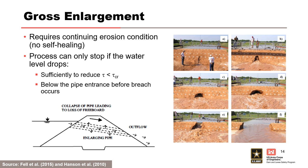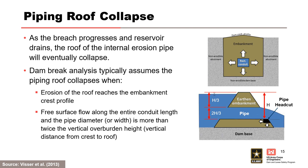Gross enlargement of a pipe or leak requires a continuing erosion condition with no self-healing. The process can only stop if the water level drops below the inlet of the developing pipe before breach occurs, or the water level drops sufficiently to reduce the hydraulic shear stress below the critical value. As the breach progresses and the reservoir drains, the roof of the internal erosion pipe will collapse. Dam break analysis typically assumes the piping roof collapses when erosion of the roof reaches the embankment crest profile, or when free surface flow exists along the entire conduit length and the pipe diameter or width is more than twice the vertical overburden height — the vertical distance from crest to roof.